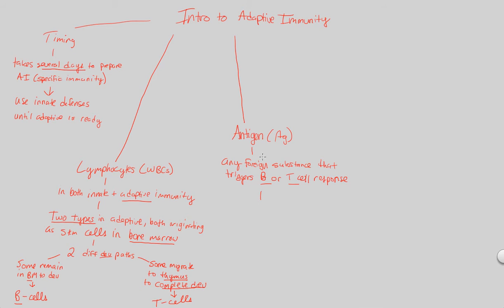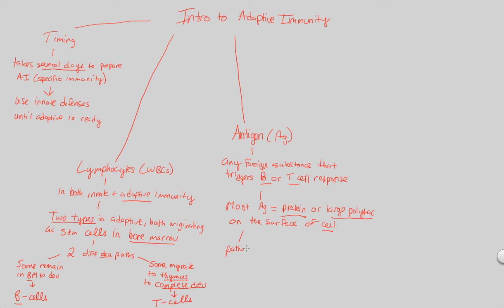Structurally, most antigens are going to be a protein molecule or sometimes a large, distinguishable polysaccharide type of structure. The key point is that they're usually surface structures on the invading cell — specifically a foreign cell. A foreign protein or foreign large polysaccharide on the surface classifies itself as an antigen, something that will cause B and T cells to respond. Antigens are found on pathogens — anything that triggers an immune response or causes disease.